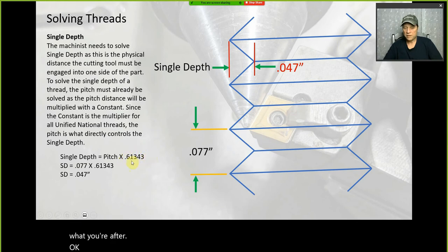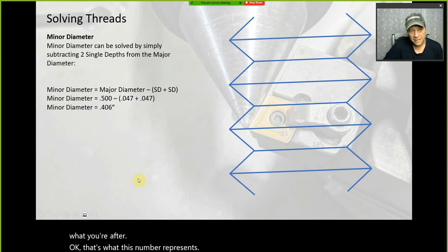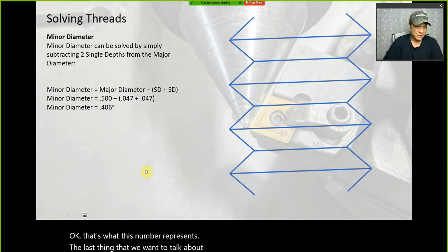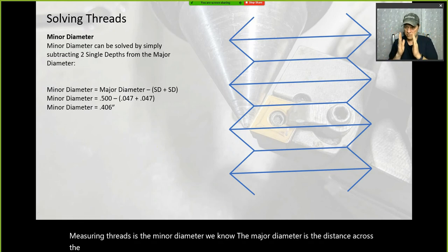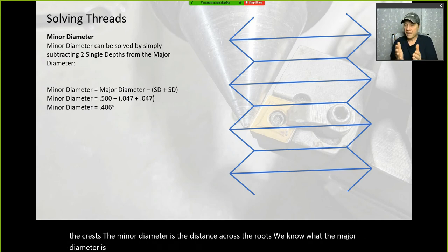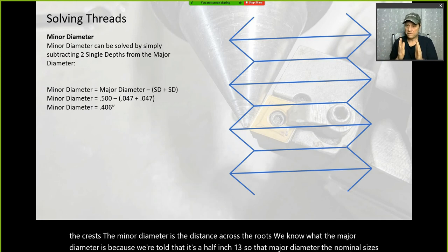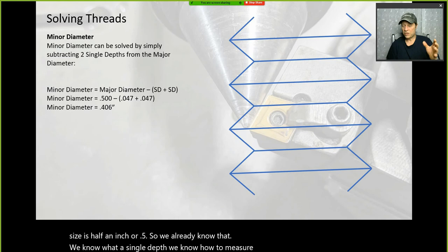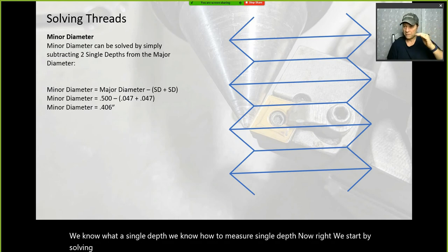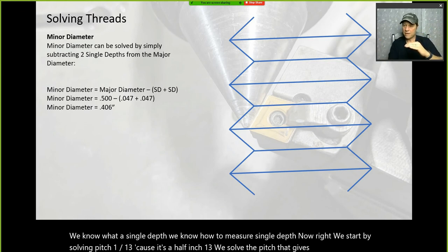The last thing we want to talk about as far as cutting and measuring threads is the minor diameter. The major diameter is the distance across the crests; the minor diameter is the distance across the roots. The major diameter is half an inch or 0.5, and we already know how to solve single depth.